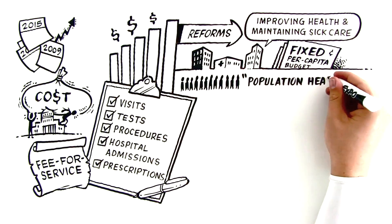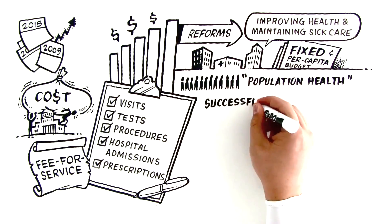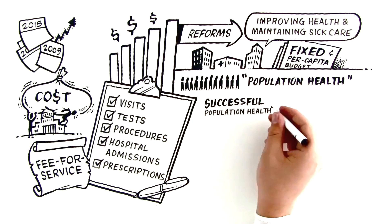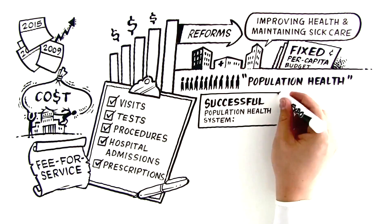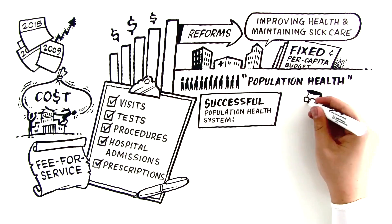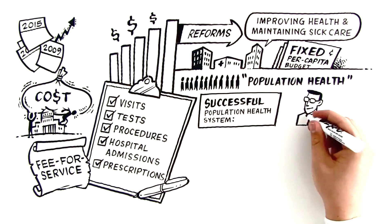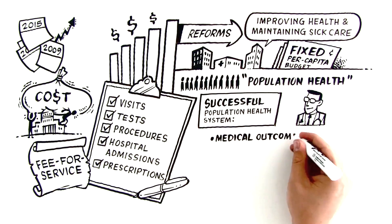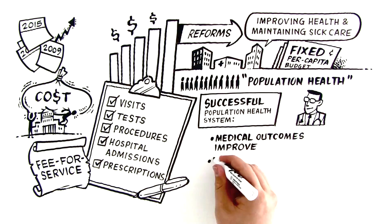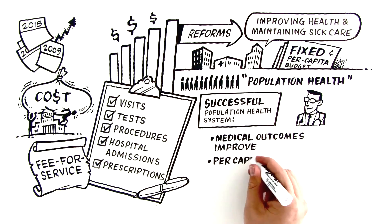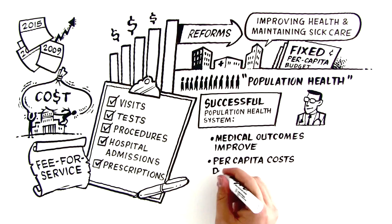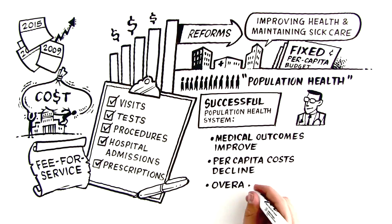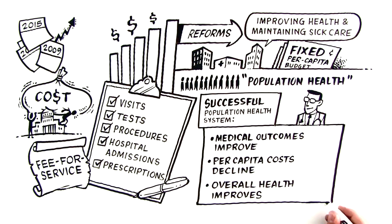A successful population health system accomplishes three objectives: the population's medical outcomes improve when they are sick, the population's per capita costs decline, and the health of the population overall improves.